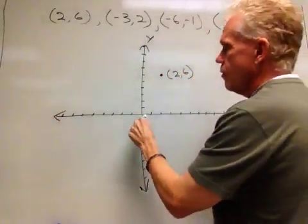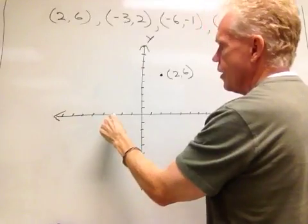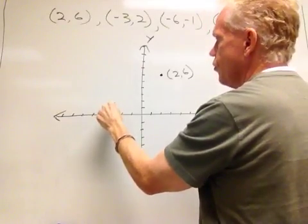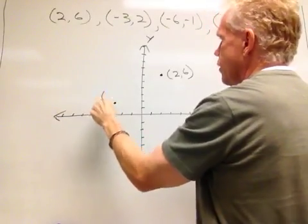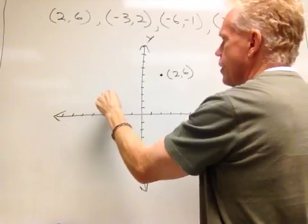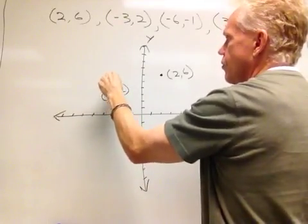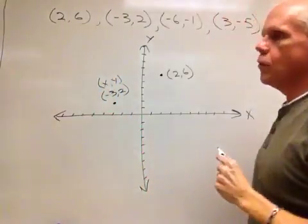Then I'll go negative 3, 2. So out here on the x-axis, negative 3, up just 2 spaces. So we're looking at the ordered pair of negative 3, comma positive 2. Remember that's the x, that's the y value in the ordered pair.